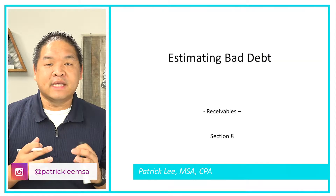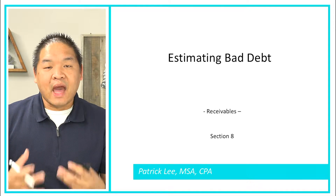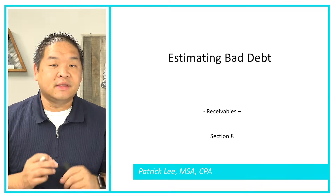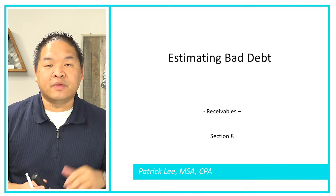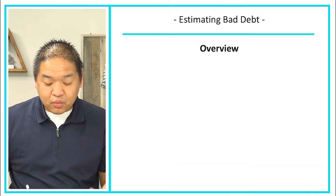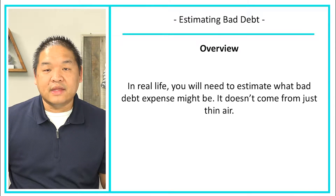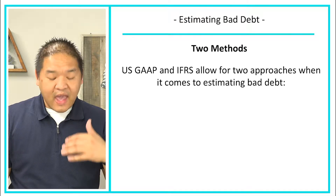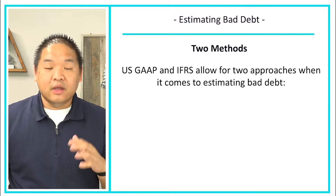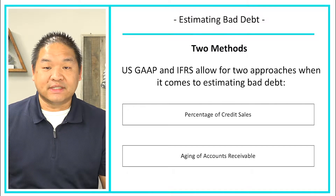In this lesson we're going to give you an overview of the ways that we can estimate bad debt. Up until this point we've given you the number, but now we're going to teach you how to calculate it. There are two methods we can use, and we'll walk through both. In real life you'll need to estimate bad debt — it doesn't just come out of thin air. Both US GAAP and IFRS allow these two methods: the percentage of credit sales, and the aging of accounts receivable.